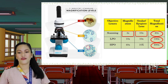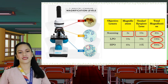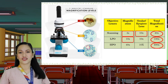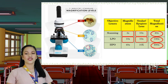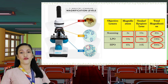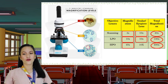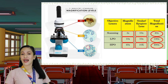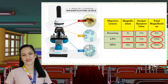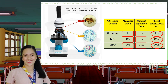If the LPO magnification is 10x and the ocular is 10x, the total magnification is 100x. Under the HPO, if the magnification power is 40x and the ocular is 10x, the total magnification of the viewed specimen is 400x. Sounds really cool, isn't it? Let's continue with the other parts of the microscope.